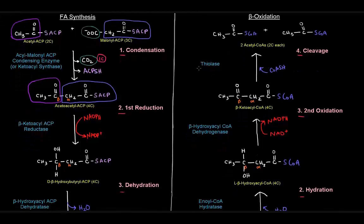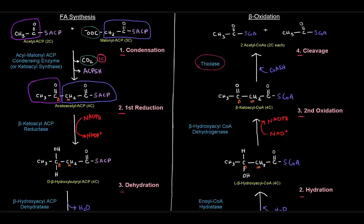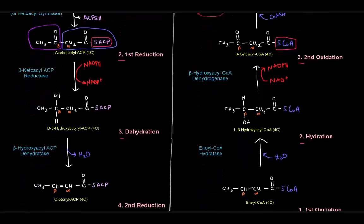However, there is a thioesterase that's probably similar to this thiolase in that it cuts the thioester linkage. But in terms of the molecules themselves, they're pretty much identical. If you look at this here, this is a beta-ketoacyl-CoA. This is a beta-ketoacyl-ACP. That's the only difference between these two. The molecules are pretty much all the same.